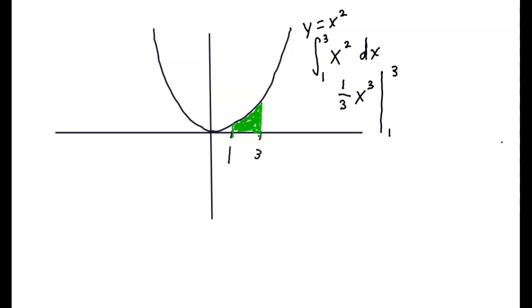Then finally, we're going to plug in 3 into x. So we do one-third times 3 to the third minus one-third times 1 to the third. Or we get one-third times 27 minus one-third times 1, which is just one-third. So we just get 9 minus one-third.